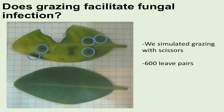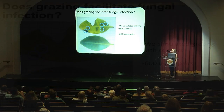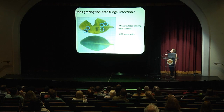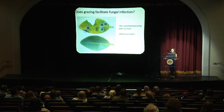Our next experiment was to look at whether grazing facilitates fungal infection. We simulated grazing on 600 leaves paired with a control leaf, then observed and counted how many lesions developed on each leaf over about a month. Our preliminary results show that all of the simulated grazed leaves did in fact have more lesions than the control leaves, suggesting there might be some sort of interaction between grazing and fungal infection.